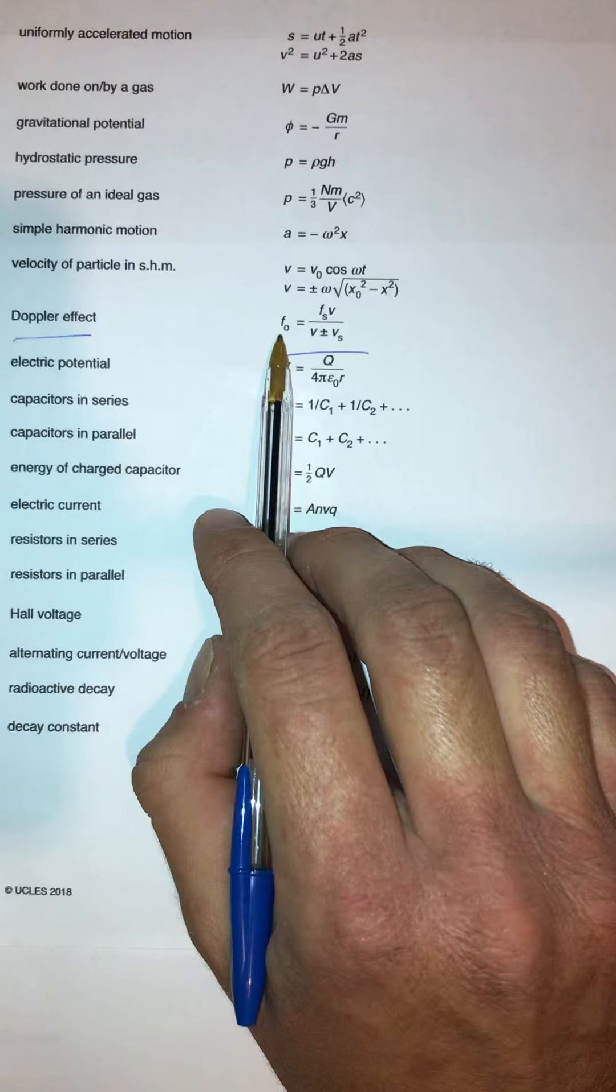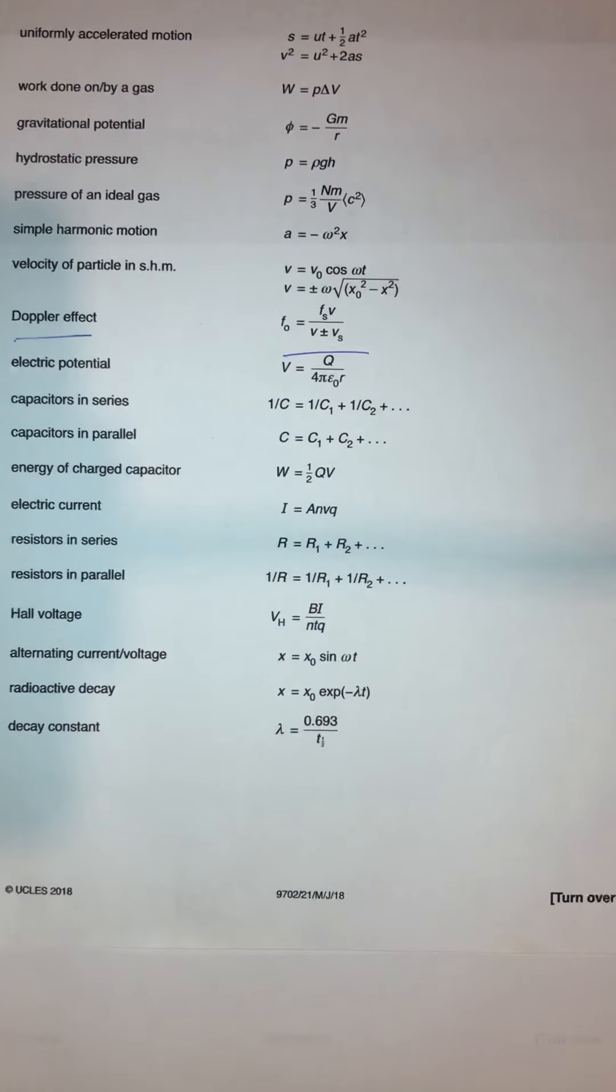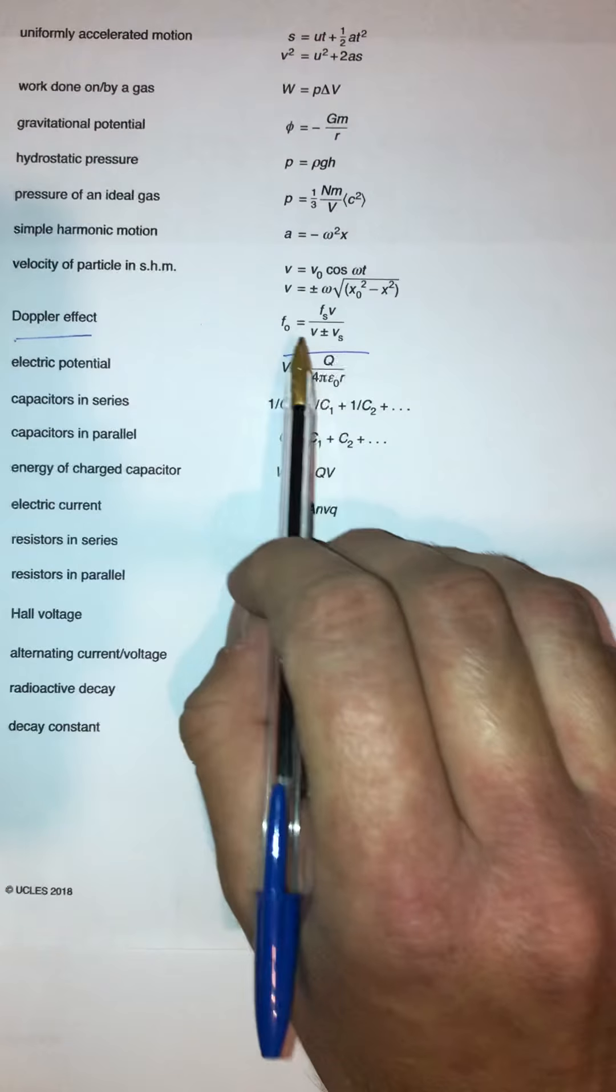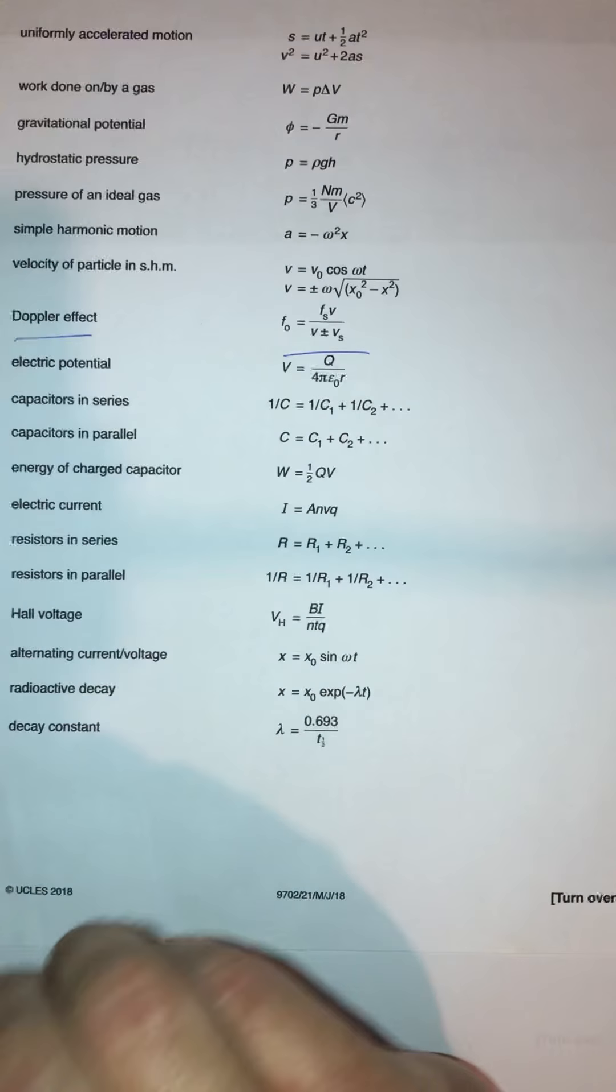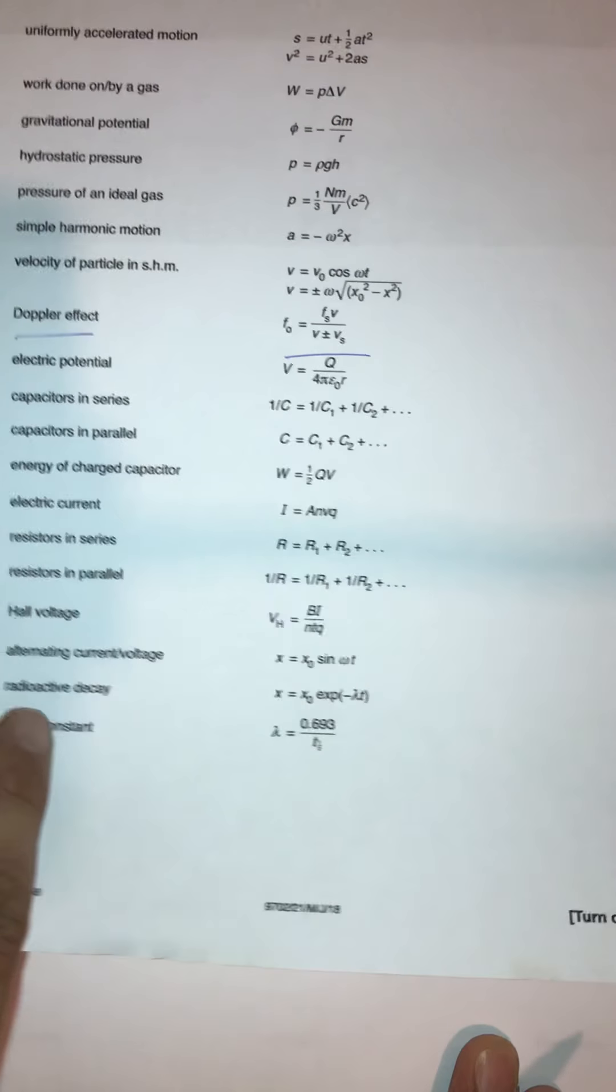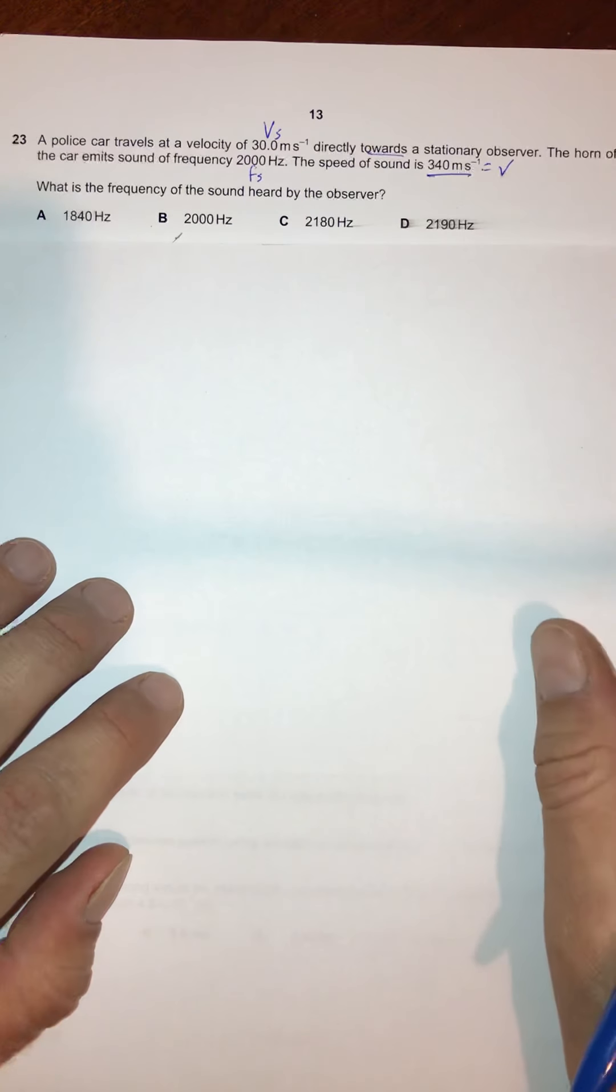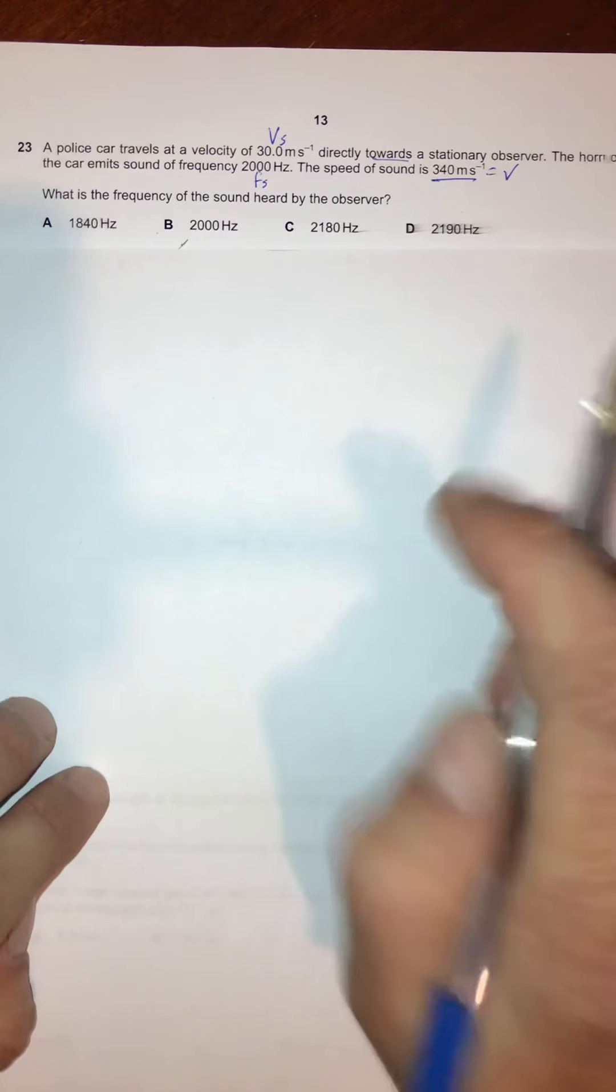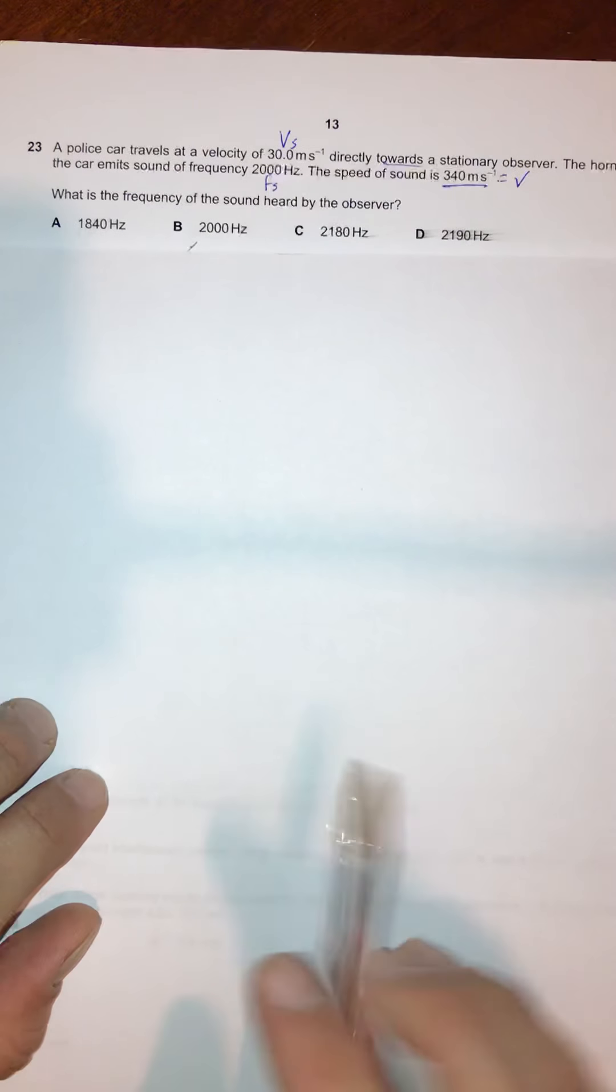And when things are speeding away from each other, that's the lower pitch part of the Doppler effect. And so in order to achieve that mathematically, we've got to add in the denominator. So feel free to use that if that's helpful. Or you could just commit it to memory. When things move away, we add. When things move towards, we subtract. And so because this is moving directly towards the stationary observer, we're going to subtract.